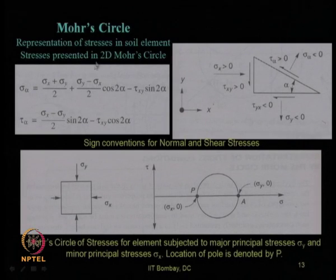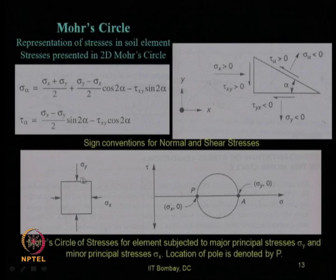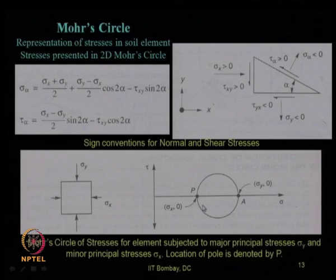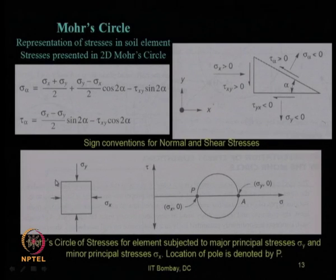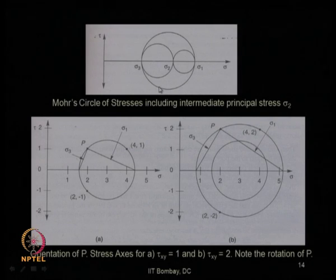Through the Mohr circle, one can represent the stresses in a soil element. When considering two-dimensional stresses like sigma_x and sigma_y and plotting them on a shear stress versus normal stress plot, we draw the Mohr circle and find the pole depending on which plane the stresses act. This two-dimensional representation can also be extended to three-dimensional stresses.